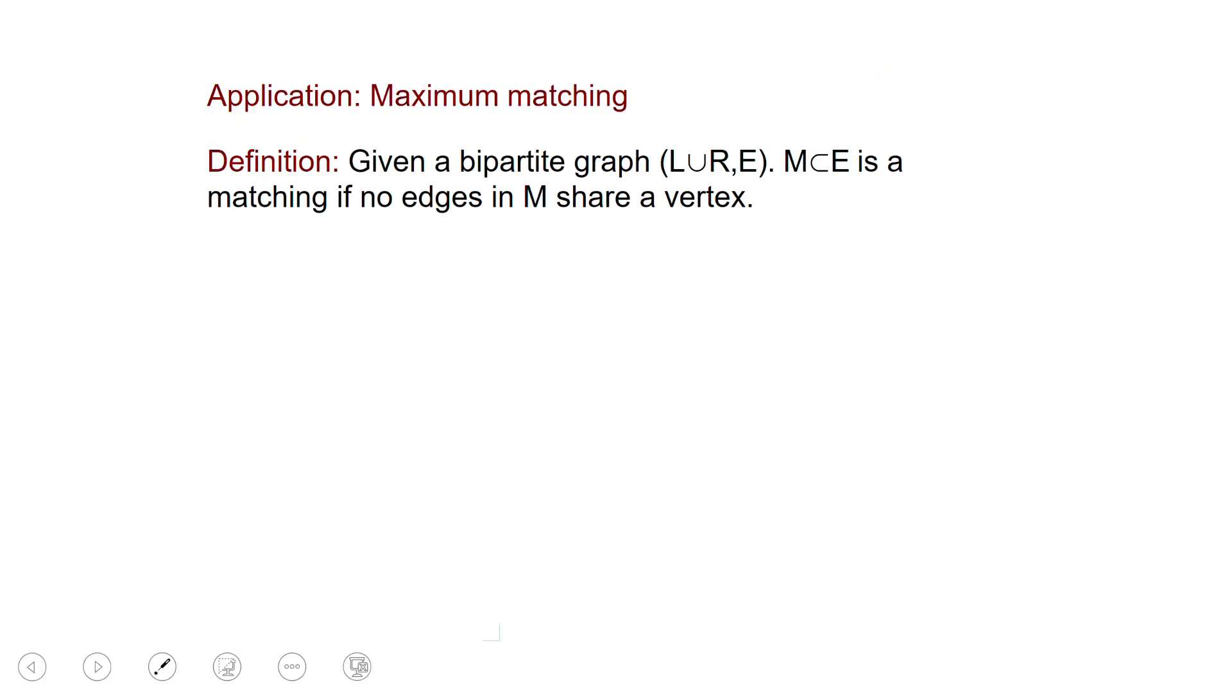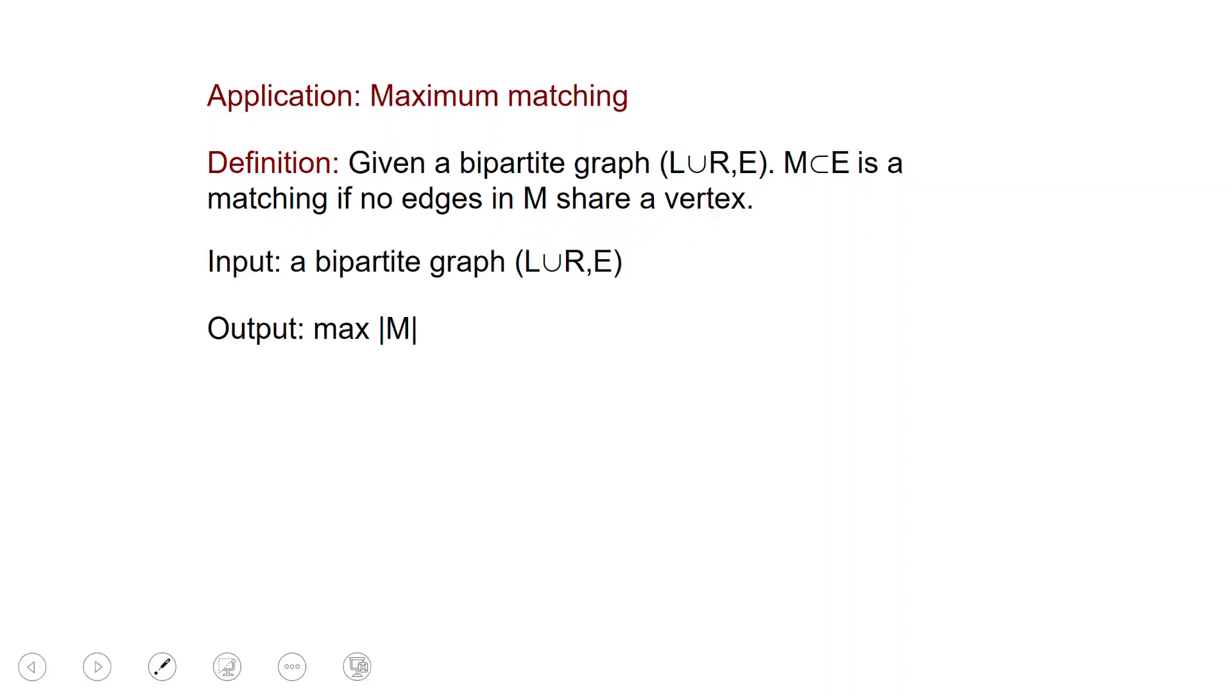As an application of maximum flow, we're going to consider the maximum matching problem. So here we are given a bipartite graph. So a graph in which the nodes are divided in two sets, L for left and R for right. And we have some edges between them. And a subset M of the edges is called a matching if no edges in M share a vertex. And in the maximum matching problem, we are given as input the graph and we want to output the maximum possible size of a matching.